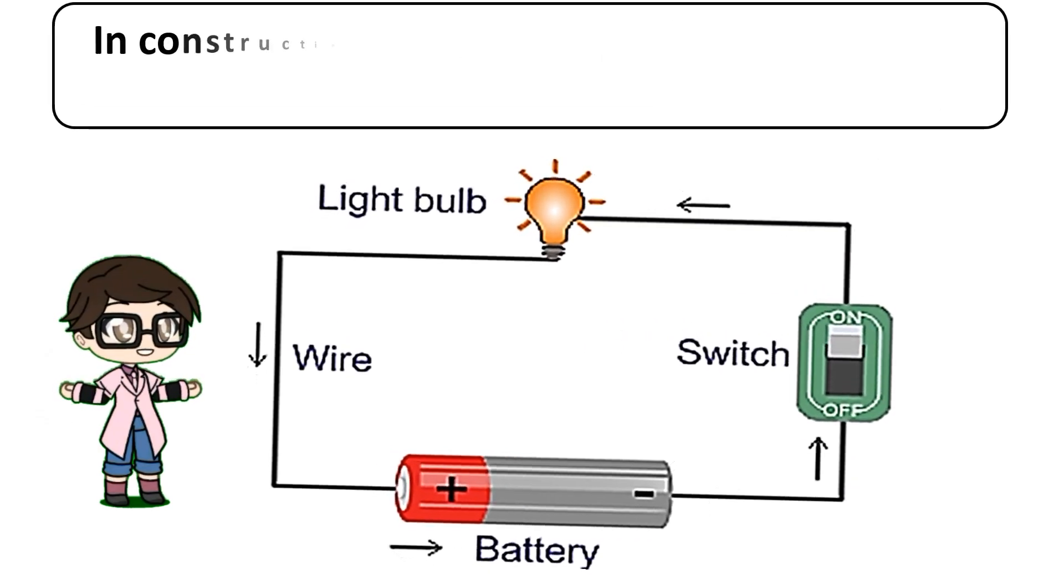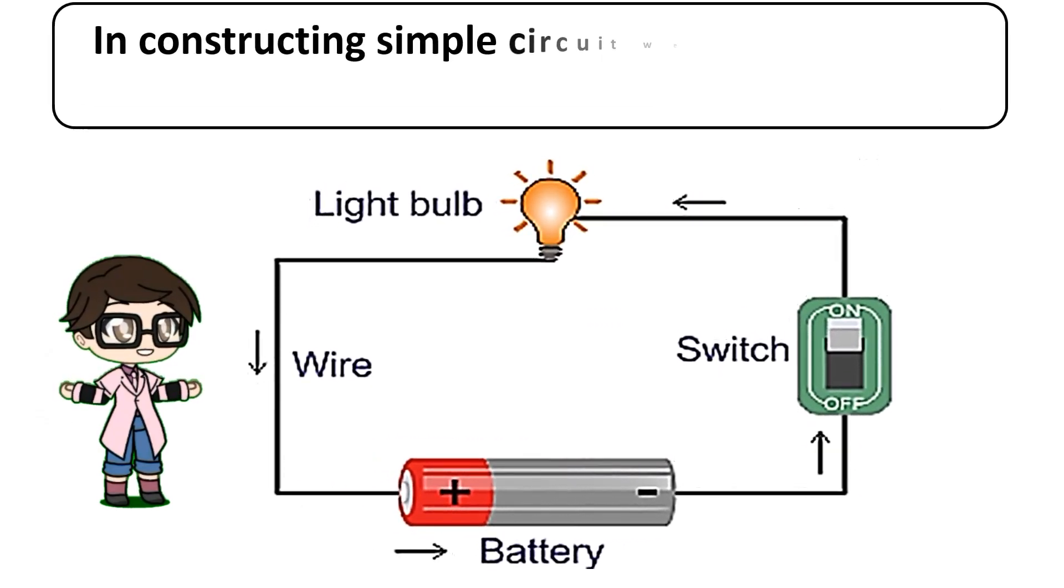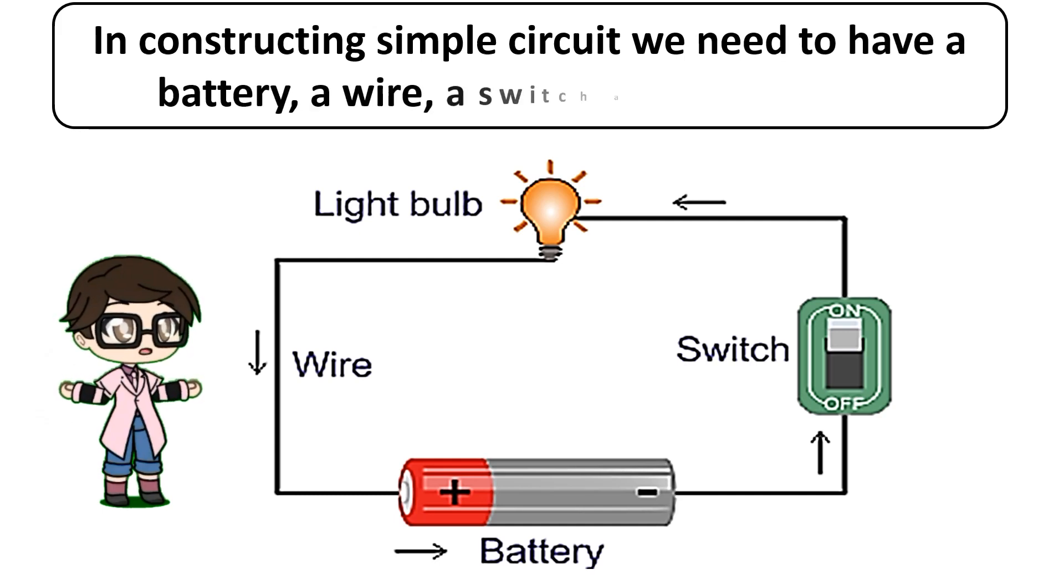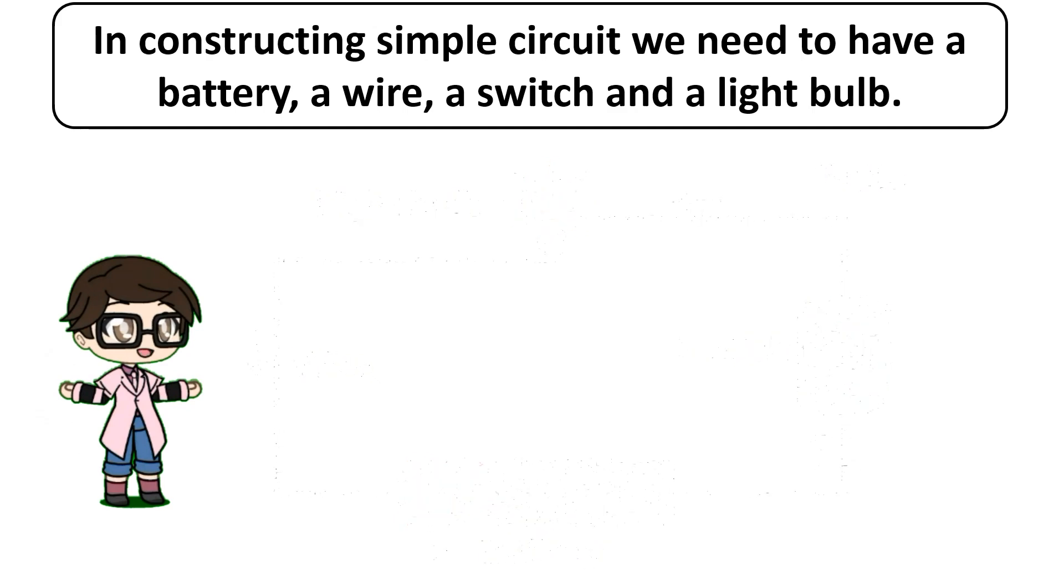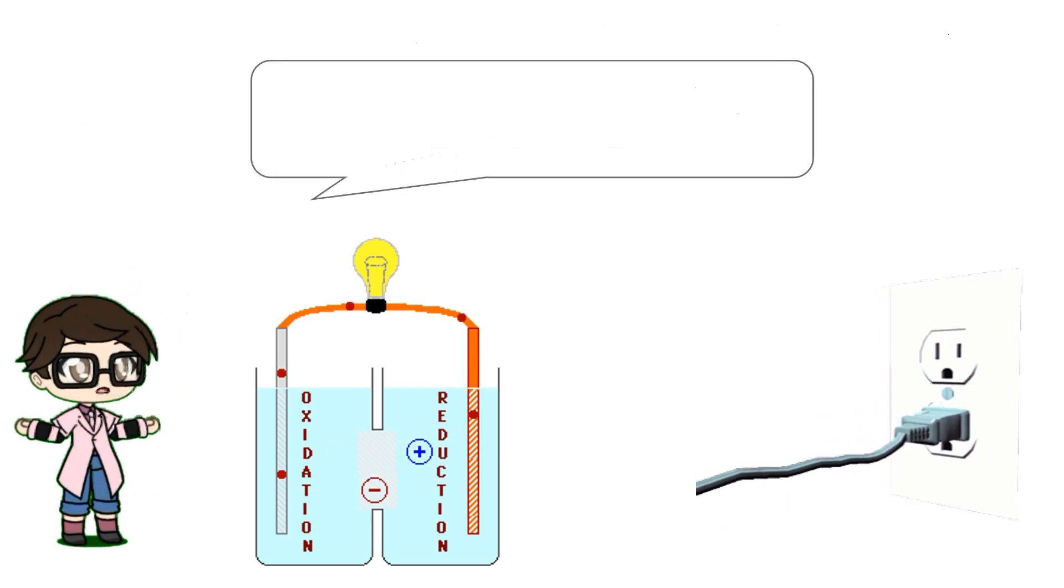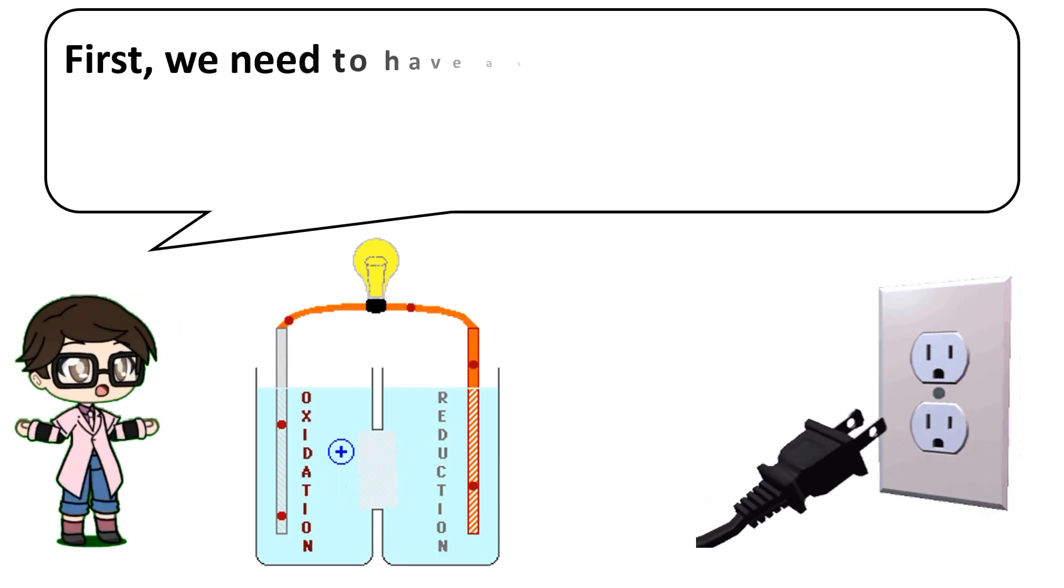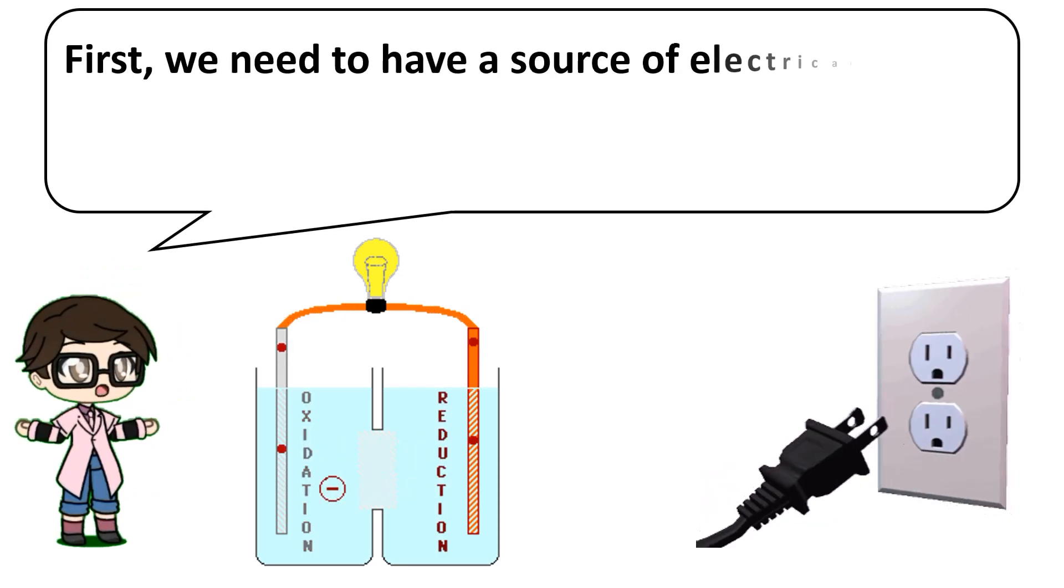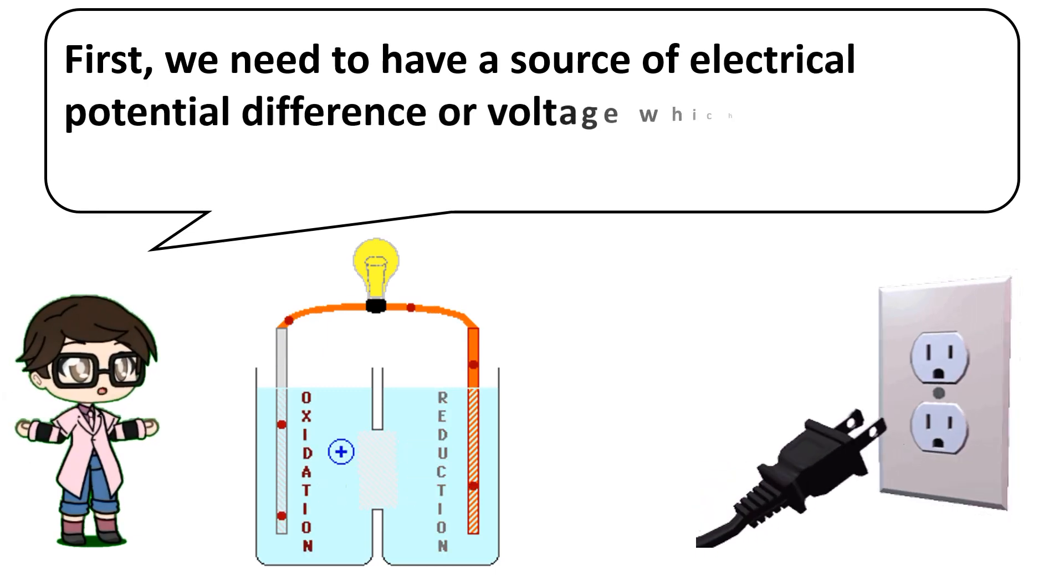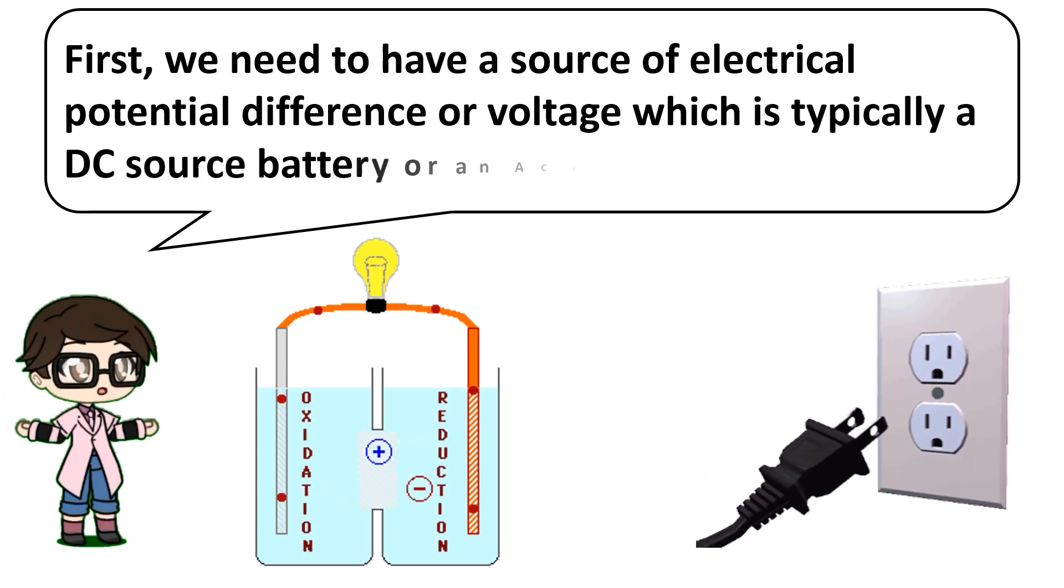In constructing simple circuit, we need to have a battery, a wire, a switch, and a light bulb. First, we need to have a source of electrical potential or voltage, which is typically a DC source battery or an AC source electric outlet.